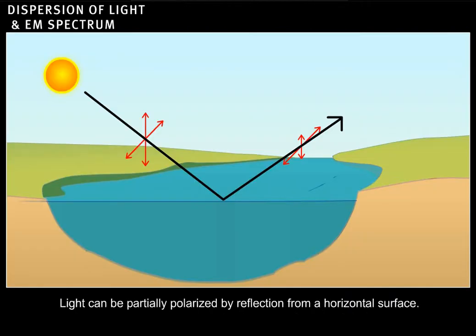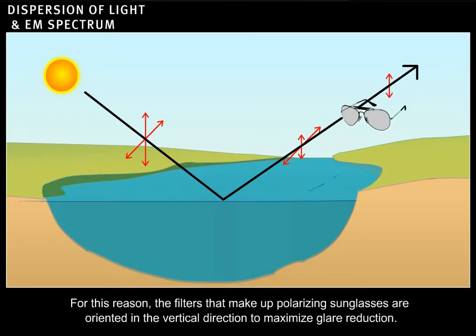Light can be partially polarized by reflection from a horizontal surface. For this reason, the filters that make up polarizing sunglasses are oriented in the vertical direction to maximize glare reduction.